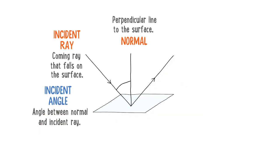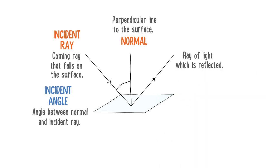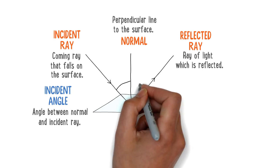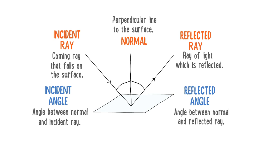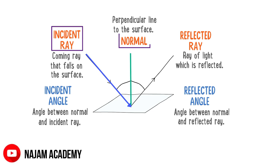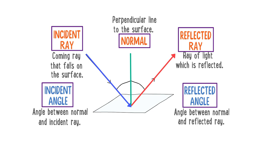The incident ray is reflected by the plane surface. The ray of light which gets reflected back in the same medium is called the reflected ray. The angle between the normal and the reflected ray is called the angle of reflection. To revise: the ray of light that hits the smooth surface is the incident ray; the line drawn perpendicular to the surface is the normal; the angle between the incident ray and the normal is the angle of incidence; and the angle between the normal and the reflected ray is the angle of reflection.